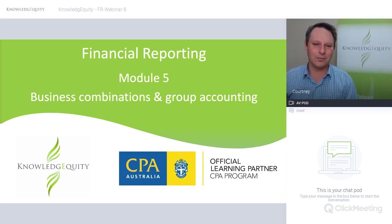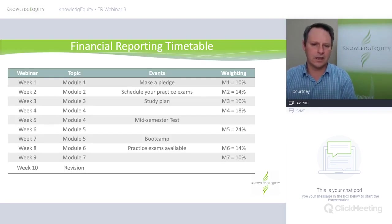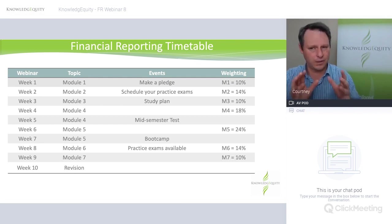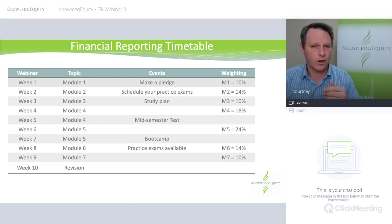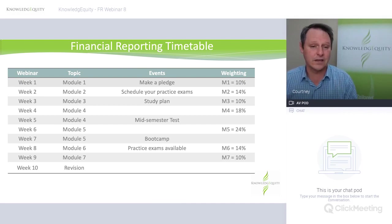My name's Courtney and tonight we're going to be looking at the final components of Module 5, Business Combinations and Group Accounting. Module 5 is worth a quarter of your exam — a lot of complicated areas. We're going to spend this session working through questions and solutions, mostly on intra-group transactions, a little bit on NCI, and then investments in associates.